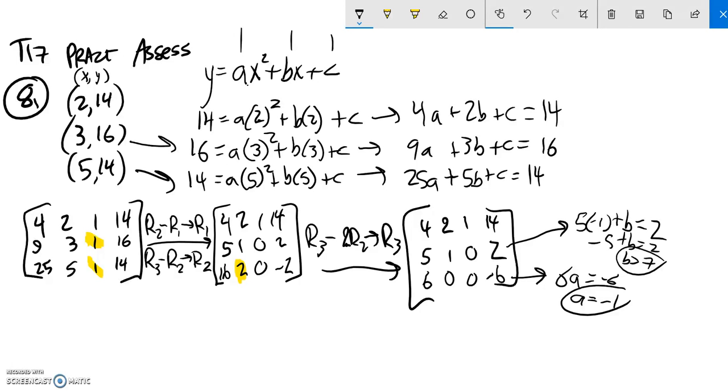And then lastly, I just have to get that first term and I'll get it from here. So I know that 4 times A plus 2 times B, B is 7, plus 1 times C. I'm going to do that one over. So 4 times A, A is negative 1, plus 2 times B, B is 7, plus 1C equals 14.